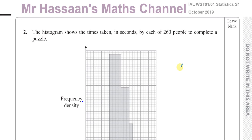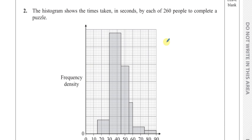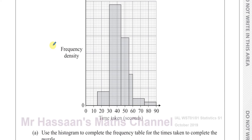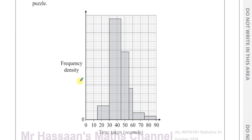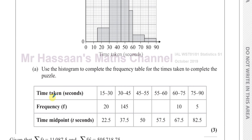Welcome back to Mr. Hassan's Maths Channel. I'm now answering question number two from the October 2019 International A-Level Statistics S1 paper. This question is about a histogram showing the times taken in seconds by each of 260 people to complete a puzzle. We have frequency density with no scale given, and the time taken in seconds. They've given us a frequency table which we have to complete using the histogram.